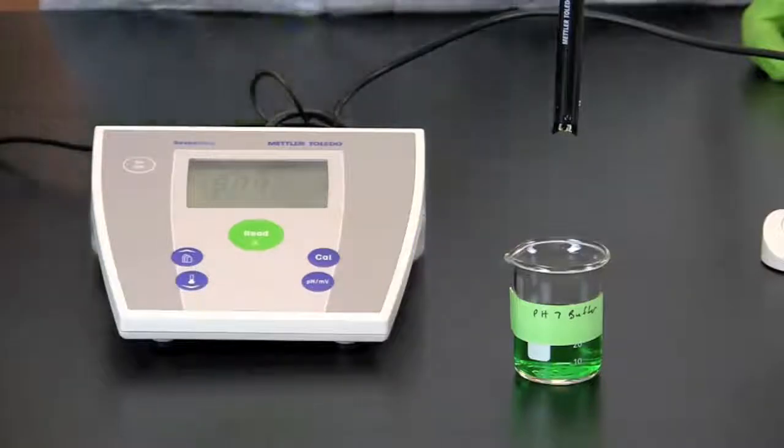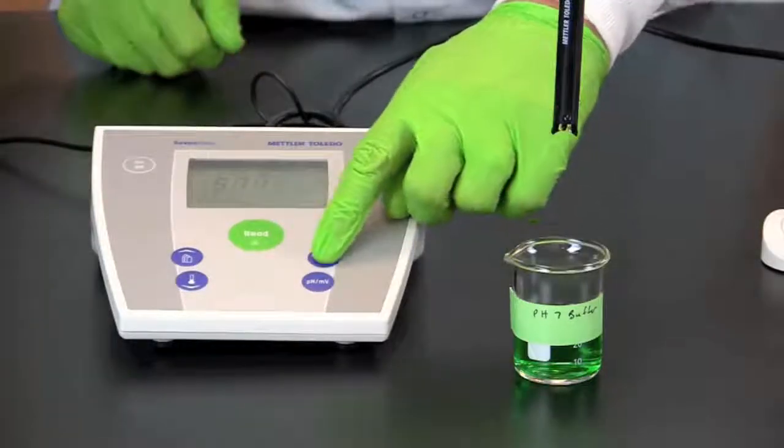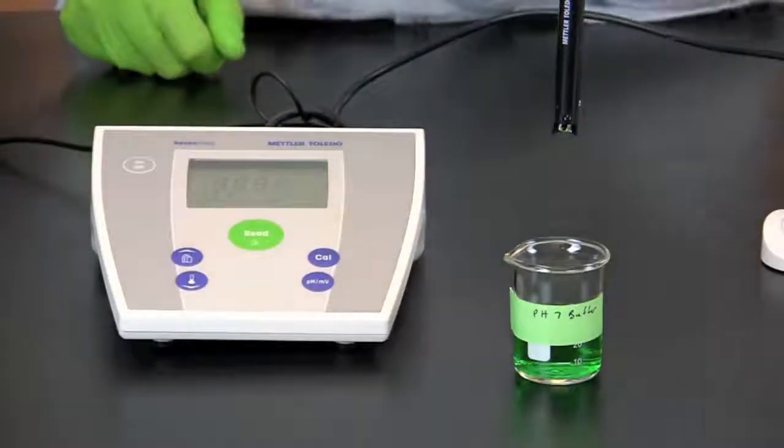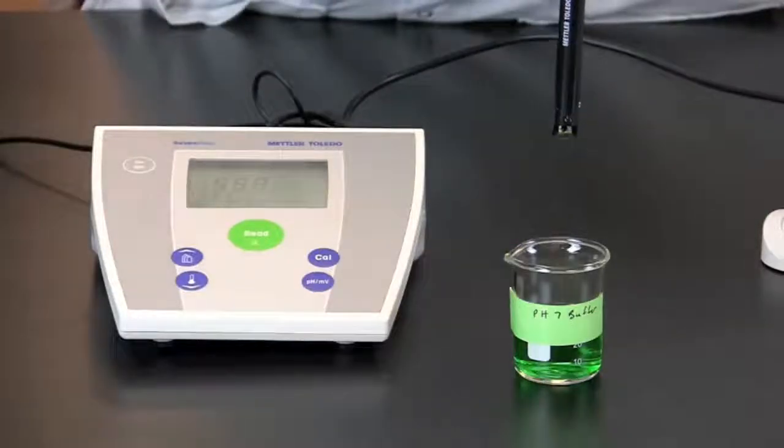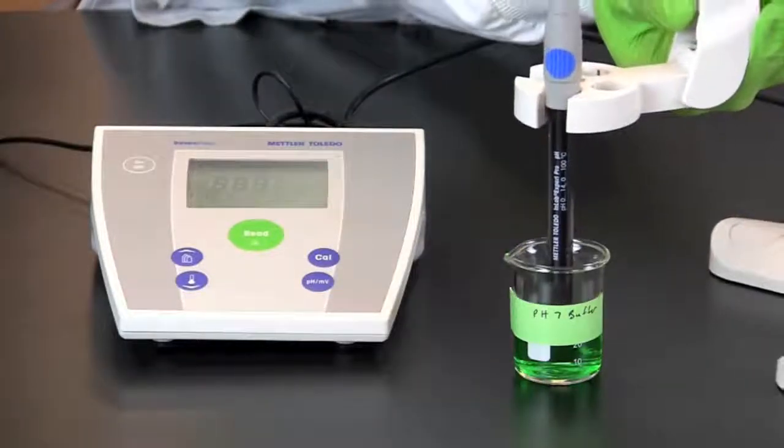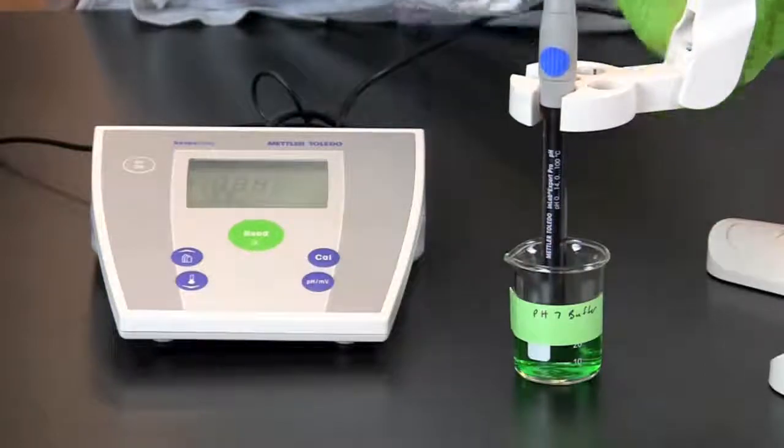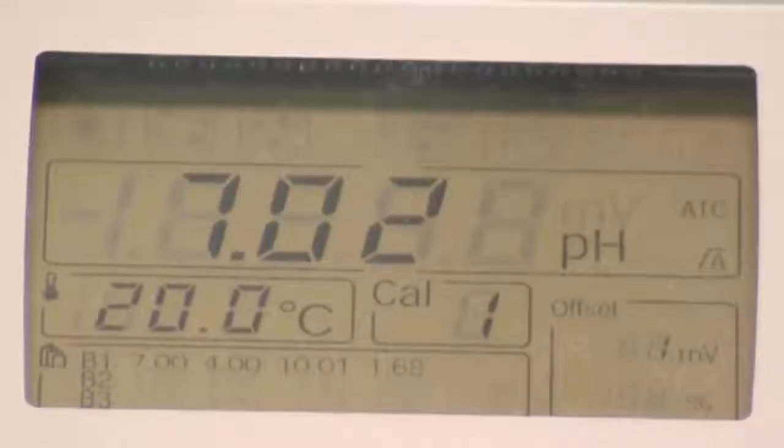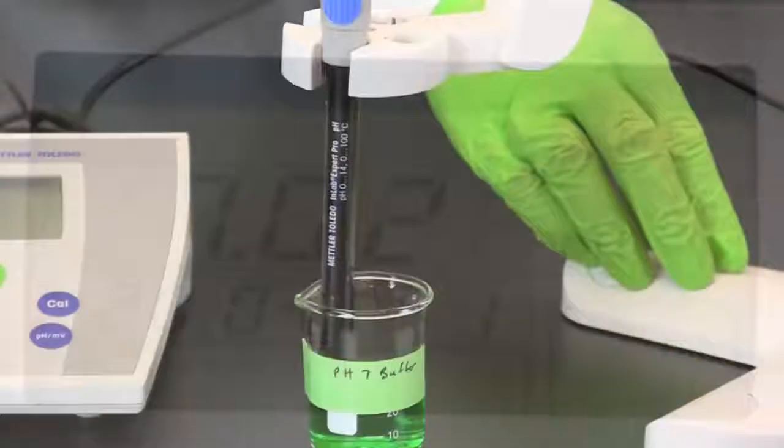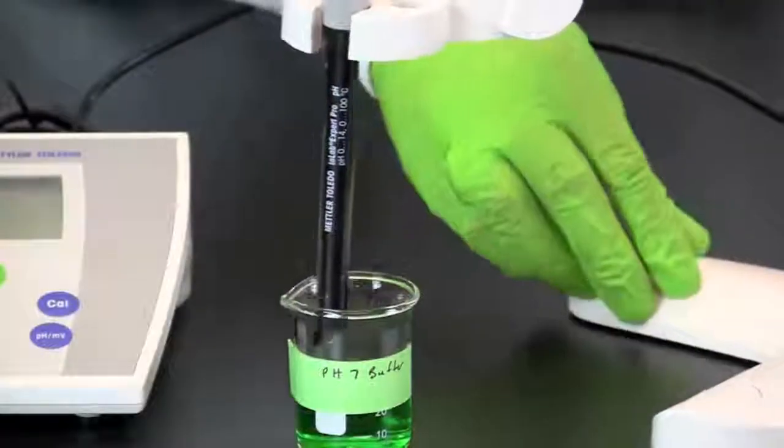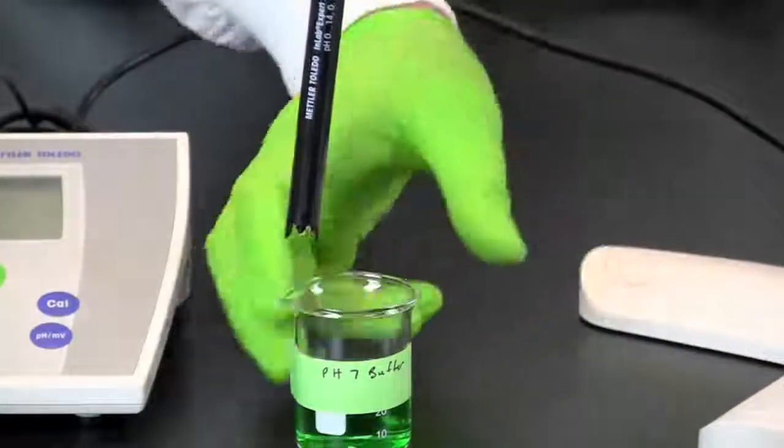Begin the process of calibration using the standard with a pH of 7. Once the standard has been calibrated you will need to remove the sample and rinse the electrode with distilled water.